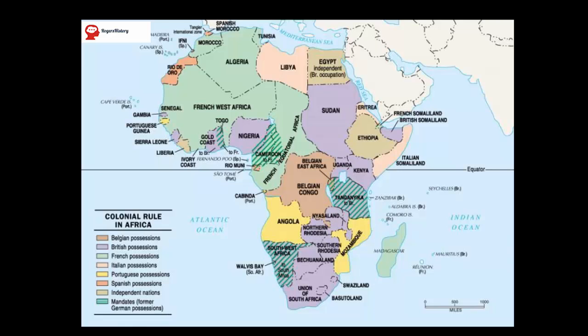At that conference they basically dished out territory. Britain, as much as other countries in Europe hated it, was the naval superpower — and that was undisputed. So in that respect, Britain could lay claim to much more land than perhaps other countries could. France was a close second.